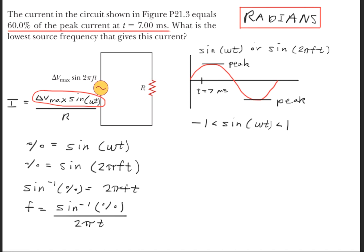Now, if we rearrange and solve for the frequency, we get that the inverse sine times the percentage divided by 2 pi times the time.